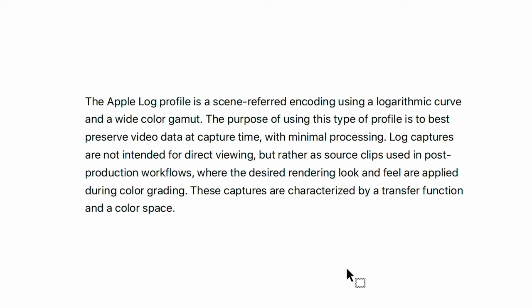The Apple Log profile is a scene-referred encoding using a logarithmic curve and a wide colour gamut. There are actually two important things from that paragraph. The first one is the word logarithmic, because that's where the 'log' in Apple Log comes from. The other one is wide colour gamut. You might have heard that phrase when you bought a TV. A colour gamut is just a range of colours, and obviously having a wide range of colours is better than having a narrow range.